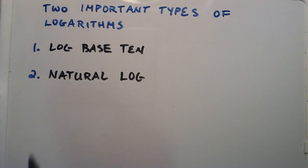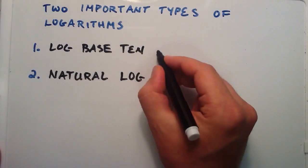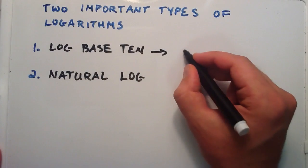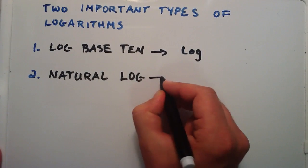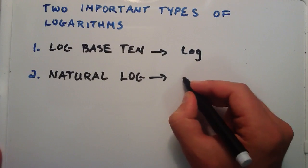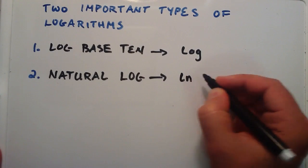So you'll see, usually on a good calculator, you'll see log base 10 written like this. And the natural log on a good calculator will be a button that just says ln.